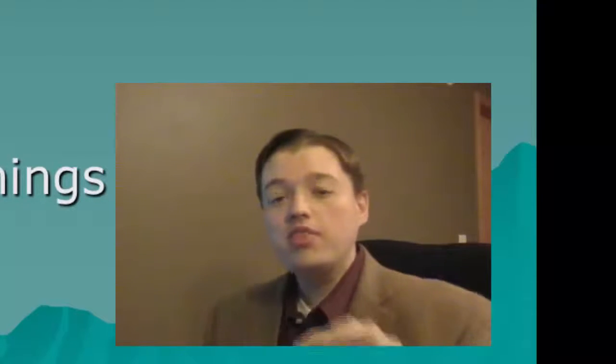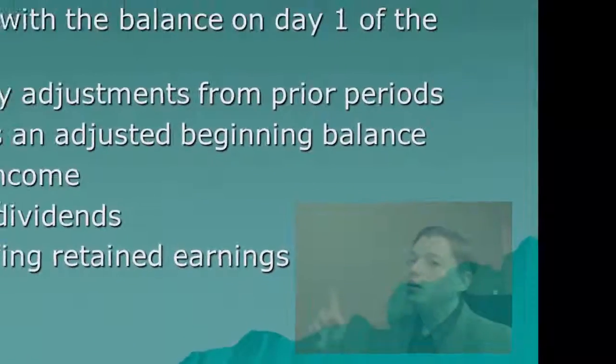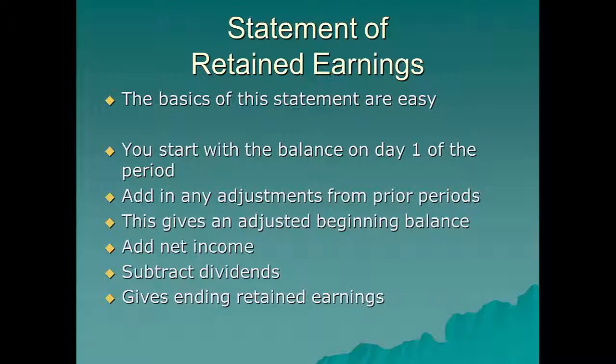First we build our income statement because we need that net income number first. Once I have that net income number, then I can do a statement of retained earnings, which uses net income and dividends to get my new retained earnings balance. So that's what we're going to talk about this time — a statement of retained earnings. After that, we'll talk a bit more about earnings per share and some ratios, and then we'll start talking about the rest of the sequence: balance sheet and statement of cash flows. But for now, let's take a look at what goes into a statement of retained earnings.